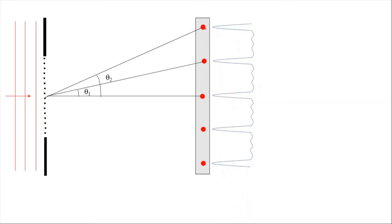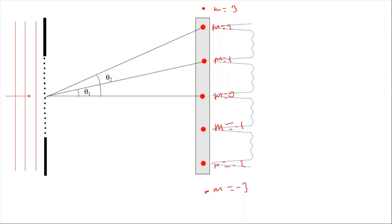At the bright spots we have high intensity of light, because light rays from all of the slits reinforce each other at these points. Between the bright spots there is little to no light. The central maximum is m equals zero, then we have the first bright (m=1), second bright (m=2), third bright (m=3), and on the other side m equals negative one, negative two, negative three.